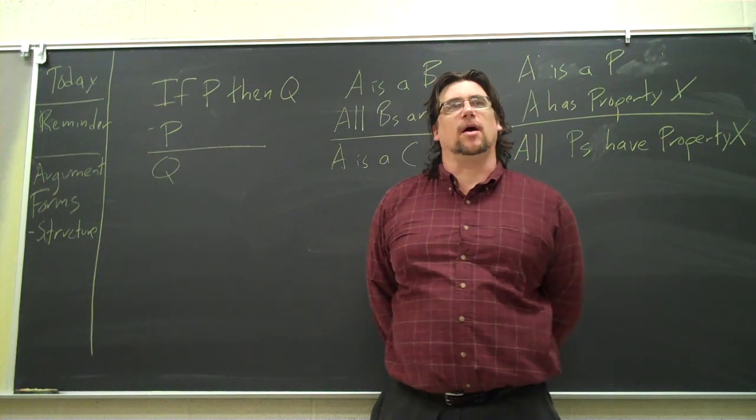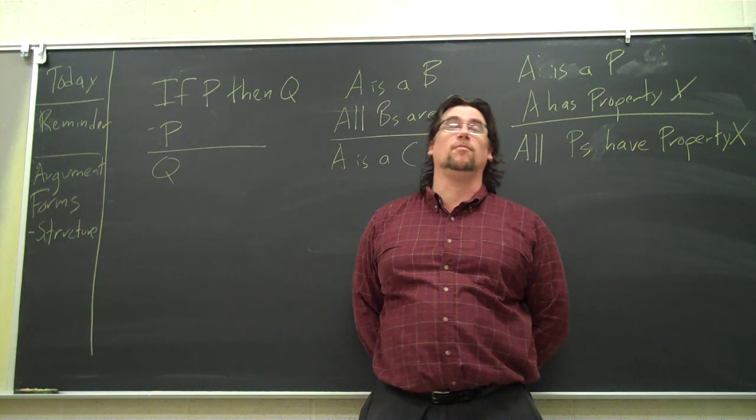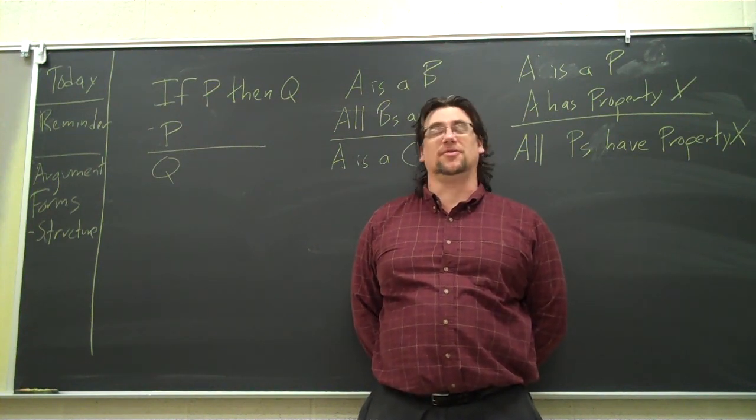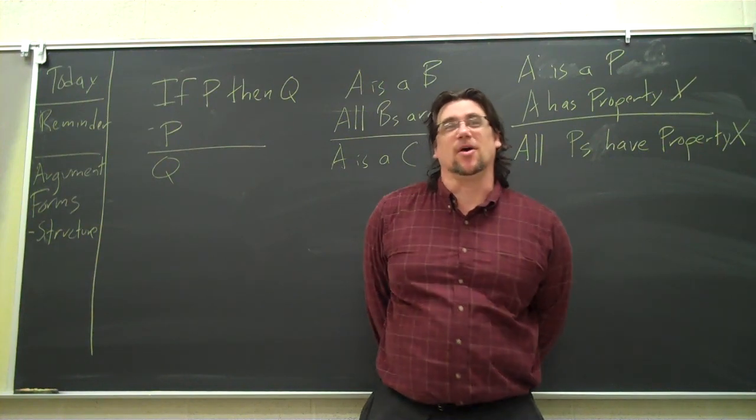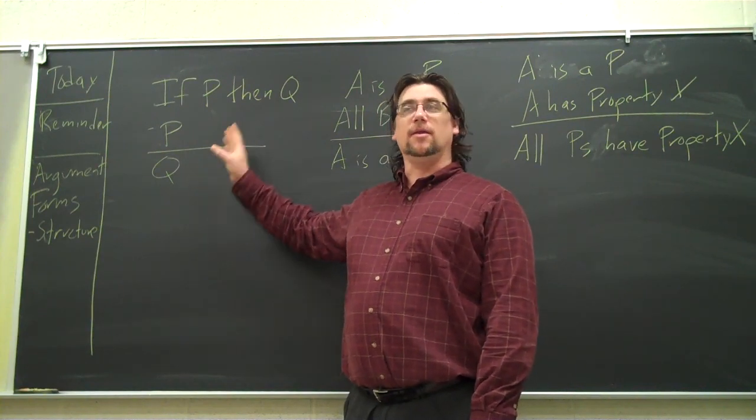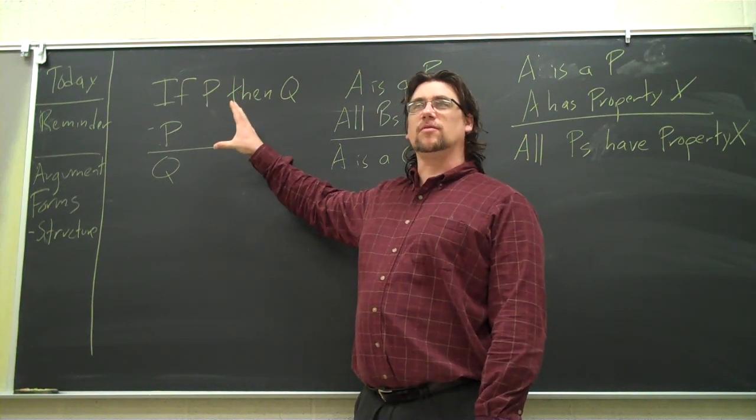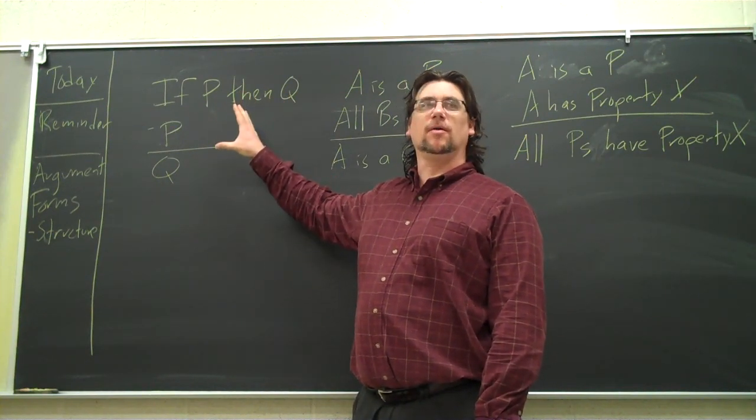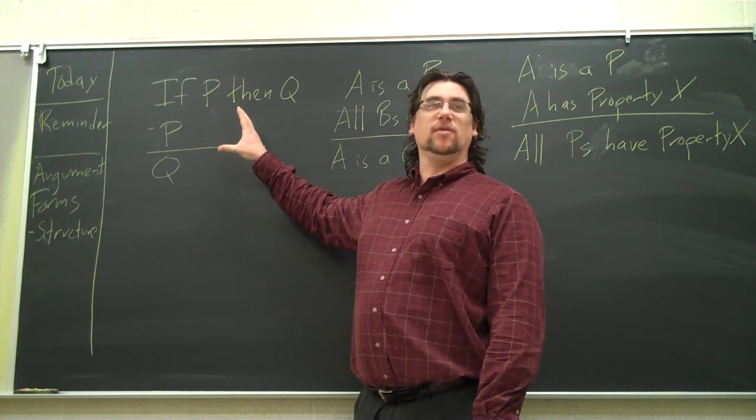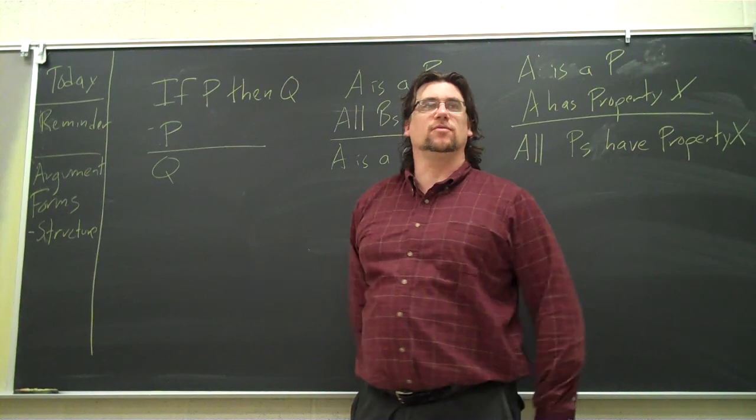Last class we talked about the difference between being valid and invalid, or being sound or unsound. If an argument is valid, that means that if those premises are true, that conclusion has to follow. And it doesn't matter, notice, because of the structure, now we're actually seeing the structure, because of the structure of this, it doesn't matter what you put in there. It could be the craziest, most outlandish, unbelievable claims you want. If you've got this structure and you accept these premises, that conclusion follows.